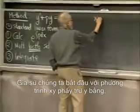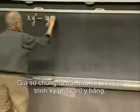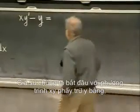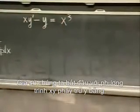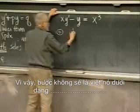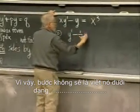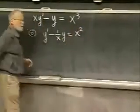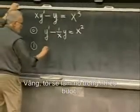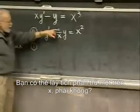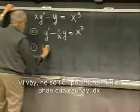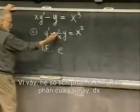Let's take a simple example. Suppose we start with the equation x y prime minus y equals x cubed. What's the first thing to do? Put it in standard form. So step zero is to write it as y prime minus 1 over x times y equals x squared. Now we calculate the integrating factor. You can integrate negative 1 over x — that integrates to minus log x. So the integrating factor is e to the integral of this dx, which is e to the negative log x.